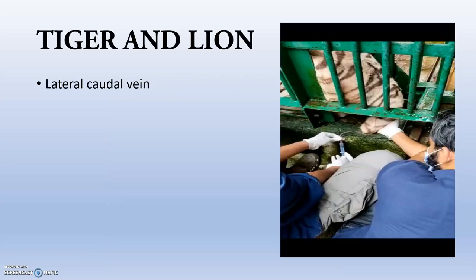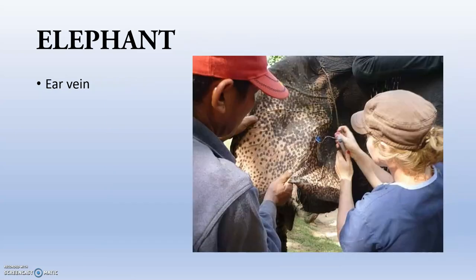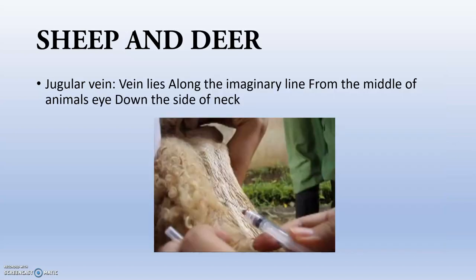For wild animals such as tiger and lion, we use the lateral caudal vein. For elephants, we use the ear vein. In the case of large ruminants such as cattle, buffalo, and bison, the ear vein is also used. For sheep and deer, we use the jugular vein, which lies along the imaginary line from the middle of the animal's eye down the side of the neck.